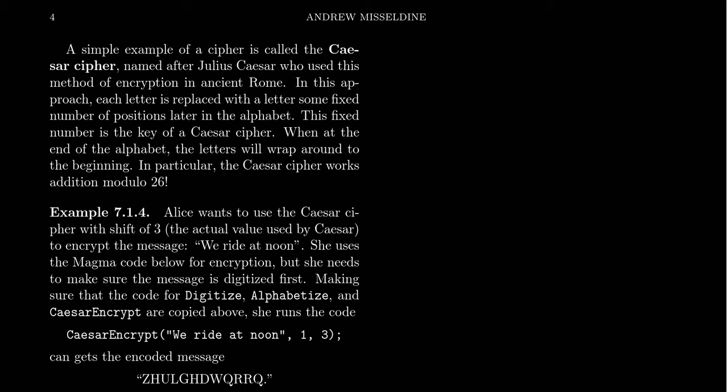In our previous video we introduced symmetric key cryptography, a method of encrypting and decrypting plaintext messages. You encrypt plaintext to ciphertext and then decrypt the ciphertext back to plaintext. The idea is that Alice can share information with Bob, assuming they have the same key, while any eavesdropper like Eve cannot decrypt the message because she doesn't have the key.